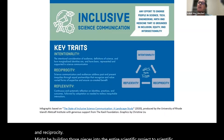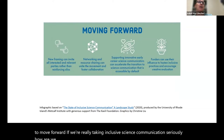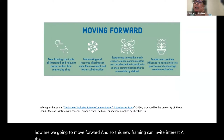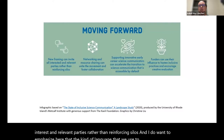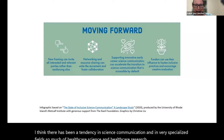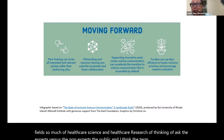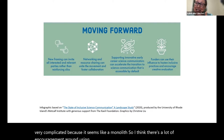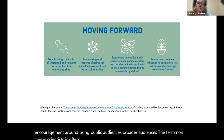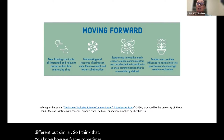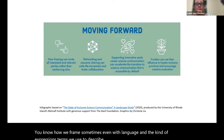How do we move forward if we're really taking inclusive science communication seriously? This new framing can invite all interested and relevant parties rather than reinforcing silos. The language we use to describe who's participating is really key. There's been a tendency in science communication and specialized fields like healthcare research to think of 'us, the experts' versus 'the non-experts — the public.' Even the term 'the public' is complicated because it seems like a monolith. There's encouragement around using 'public audiences,' 'broader audiences,' or 'non-career scientists.' How we frame our relationship with communities using language really makes a huge impact when it comes to building relationships.